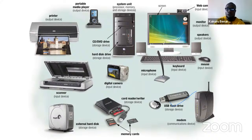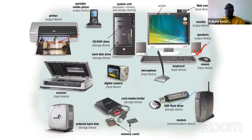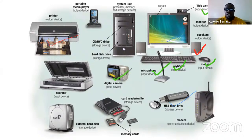For example, a USB is a storage device, a monitor is an output device, a printer is also an output device, and speakers are also output devices. But today our emphasis is on input devices. Some examples we can identify here: we have a mouse, a keyboard, a microphone, a webcam, and a digital camera.